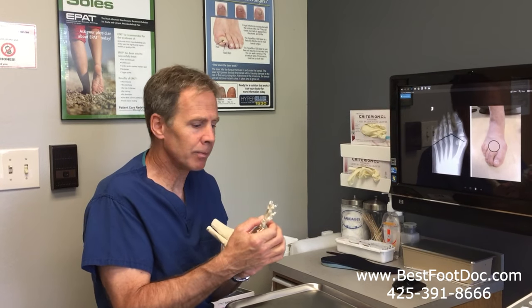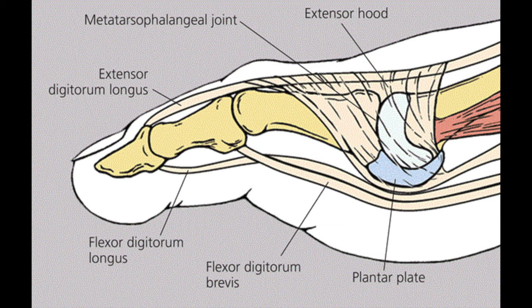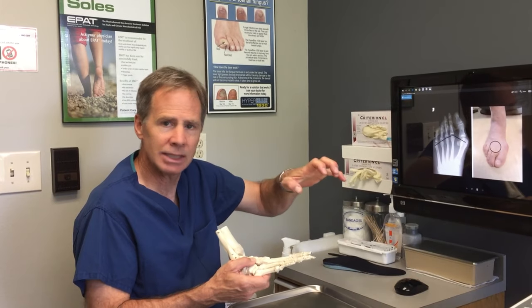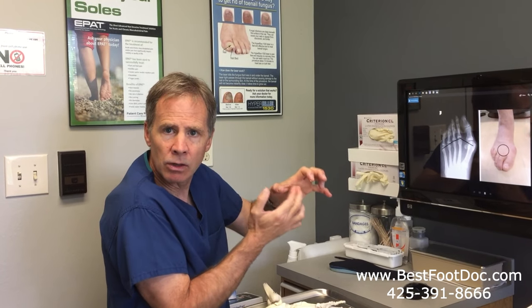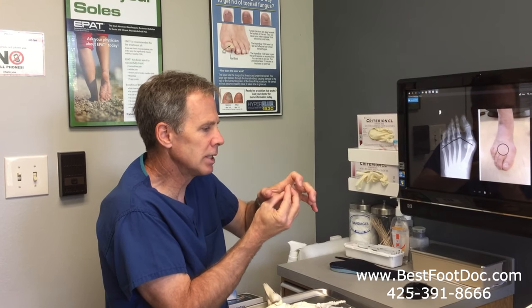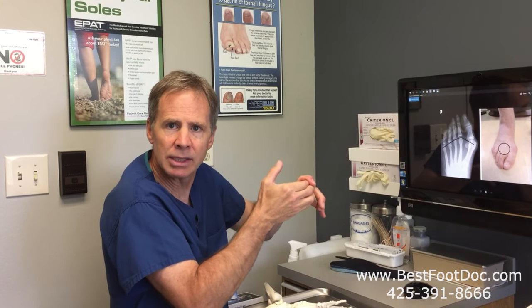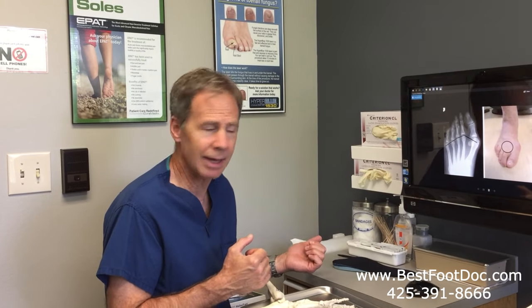If it's really bad, it can actually tear the bottom reinforcement of that capsule, which is called the plantar plate. People then get a hammer toe of that second digit because the bottom is ruptured and torn and no longer holding things together. Once it gives, the toe goes up quickly — whereas a normal hammer toe might take years to develop, if it forms within days or weeks, that's often a sign of a plantar plate tear, which is a form of this capsulitis.